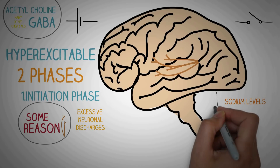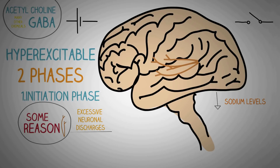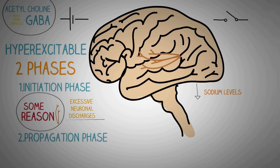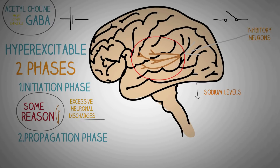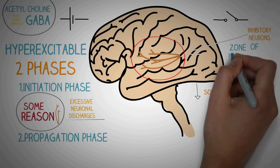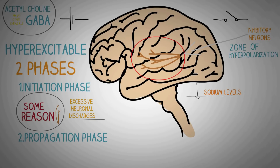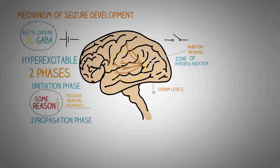One of the most important reasons is decreased sodium levels of the body, called hyponatremia. The second phase is called the propagation phase. Normally, the neurons which have neuronal discharges are surrounded by a zone of inhibitory neurons called the zone of hyperpolarization. This zone of hyperpolarization prevents the spread of excessive neuronal discharges to other parts of the brain. But due to some abnormality in the brain like decreased sodium levels, the zone of hyperpolarization gets depolarized and the spread of neurons can occur to the other parts of the brain. This is how the seizure propagates to other parts of the brain after it has been initiated in one region.